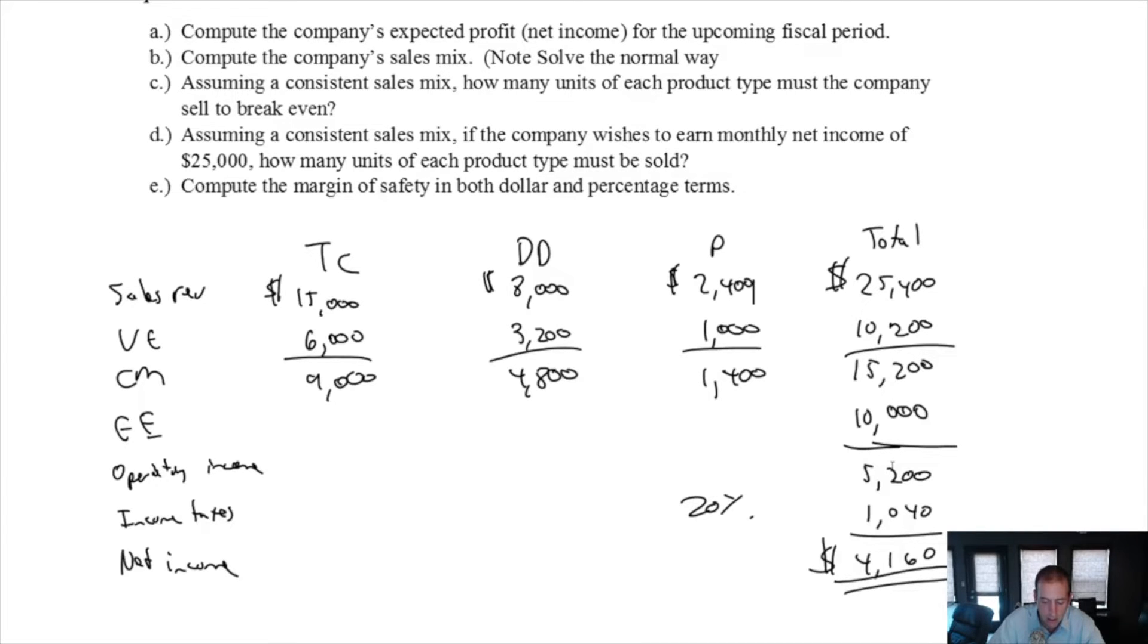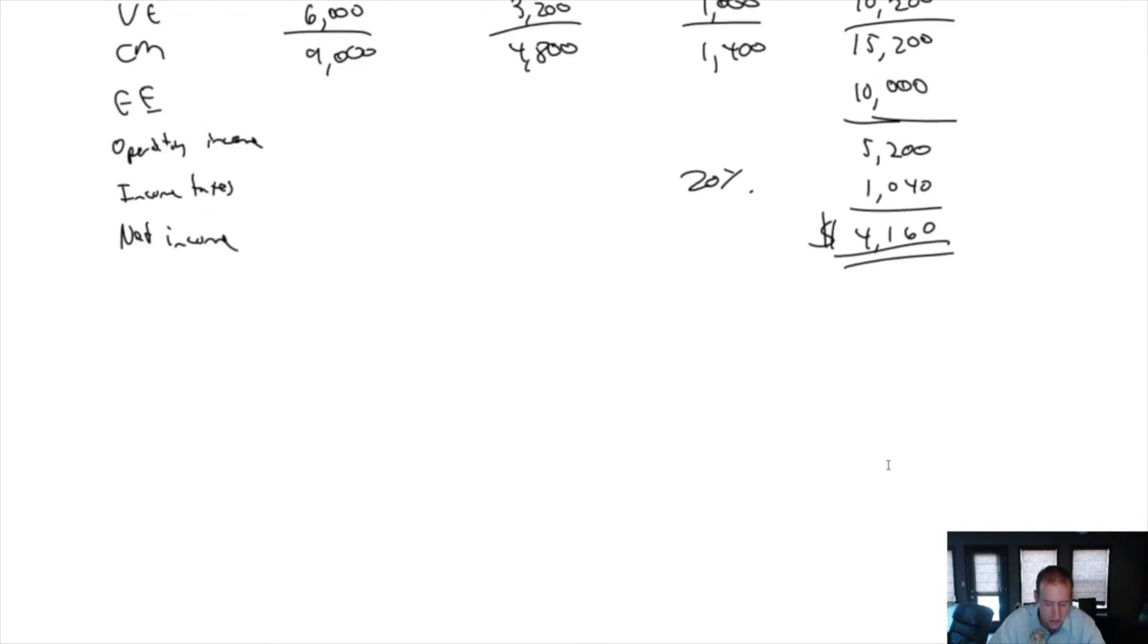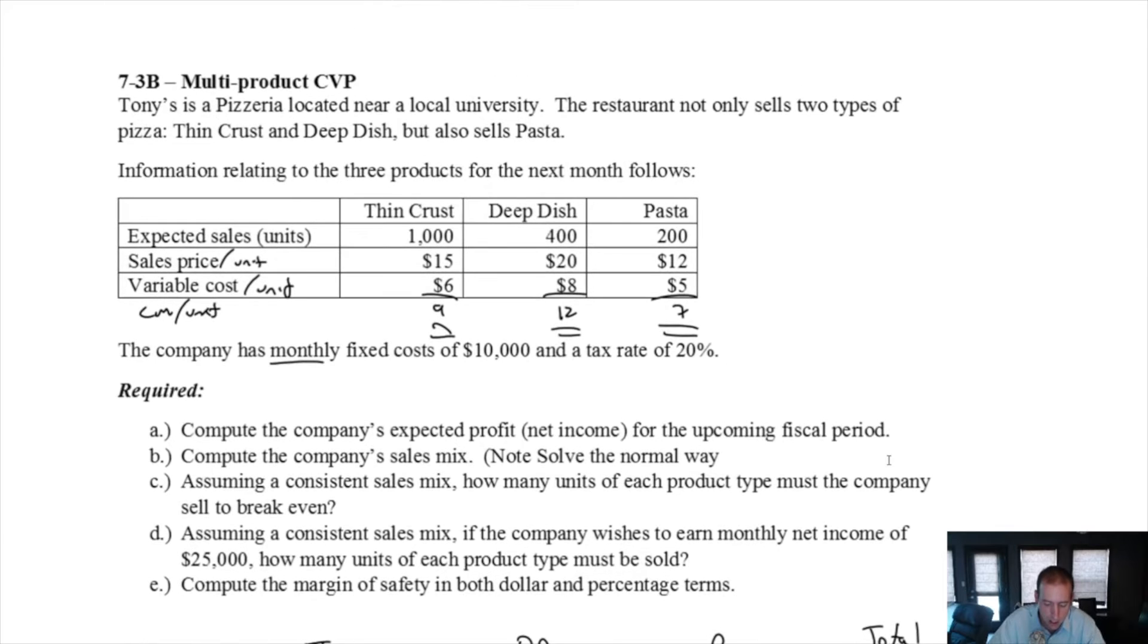Part B says compute the company sales mix. Our company sales mix are 1,000 units of thin crust, 400 units of deep dish, 200 units of pasta, so 1,600 units total.